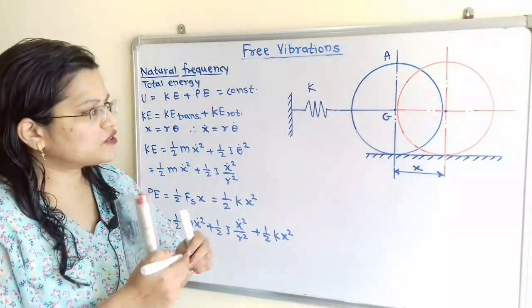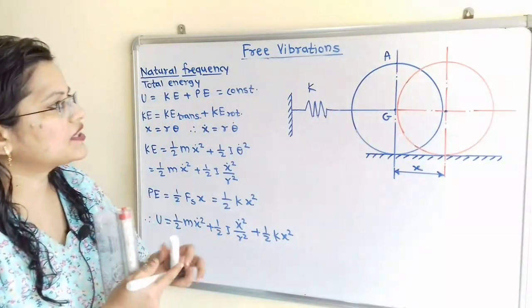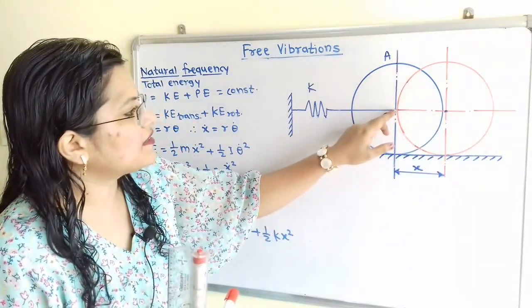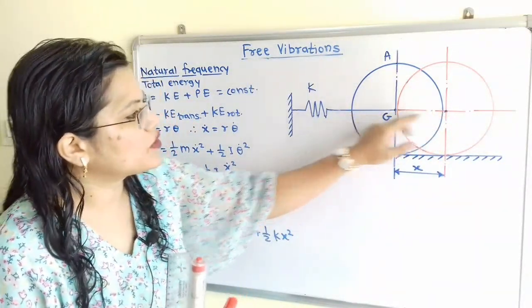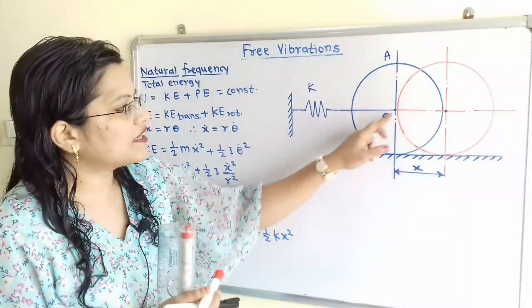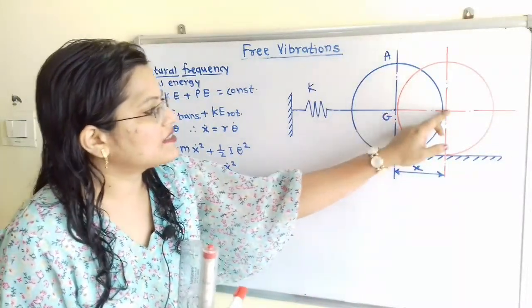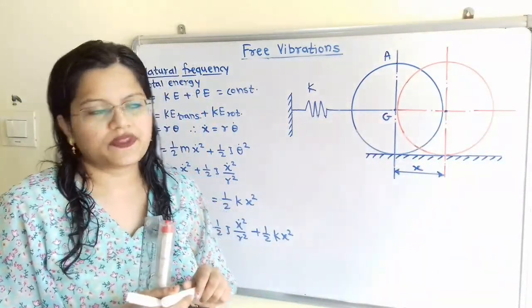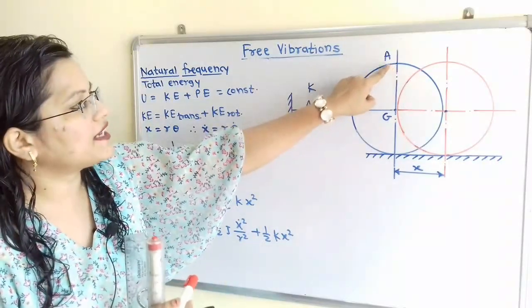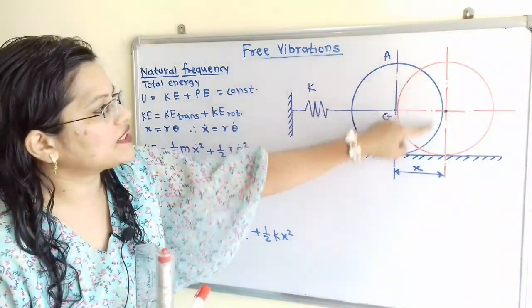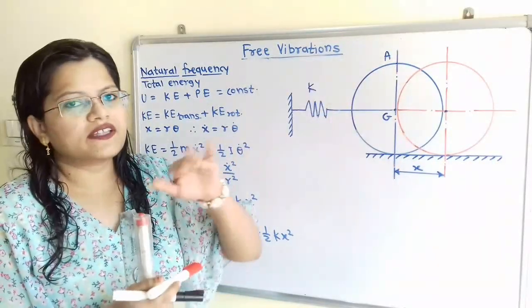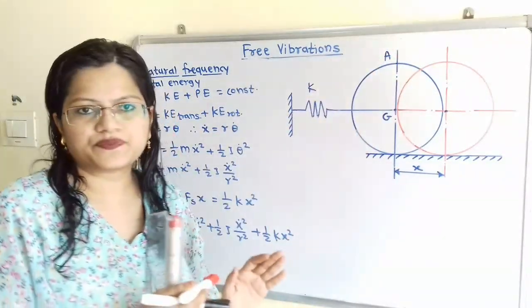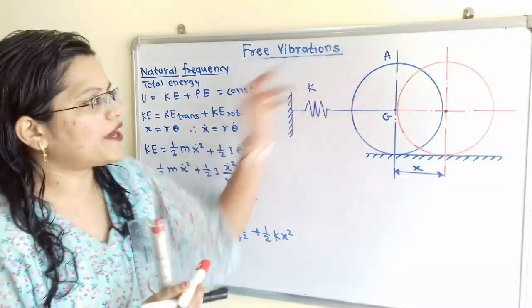When the disk is rolling on the fixed surface, the center is moving along a horizontal line, so there is translational motion through a distance X. For point A on the circumference, there is rotational motion.